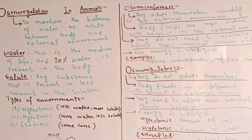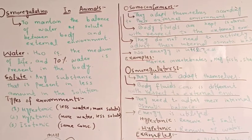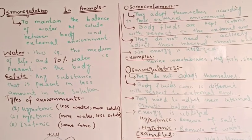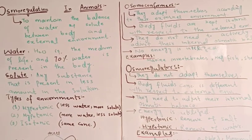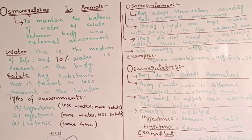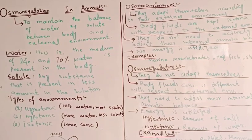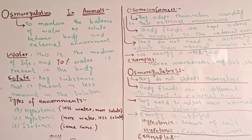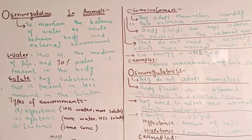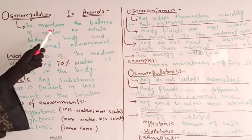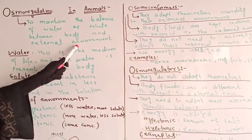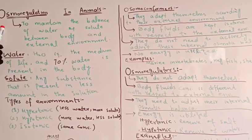What is Osmoregulation? Osmoregulation is a process that maintains the concentration of the body and water — meaning the gain and loss of water and solute concentration balance. To maintain the balance of water and solutes between the body and the external environment, this process is known as Osmoregulation.